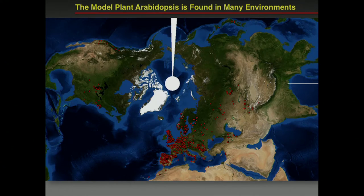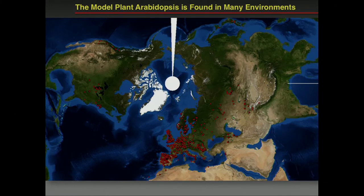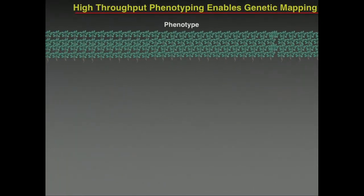We can use this resource to study natural variation — the ability to adapt to different climates, which is very important if you think about climate change. But also, the reason for differences in phenotypic traits, like having different root growth properties. So how do we get from all these strains to the genes? We use a modern approach called genome-wide association mapping, which is also very prominent in human genetic studies.